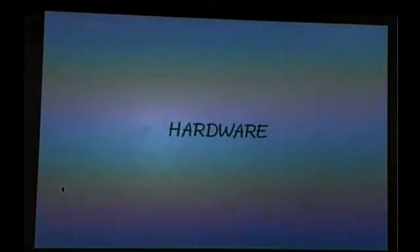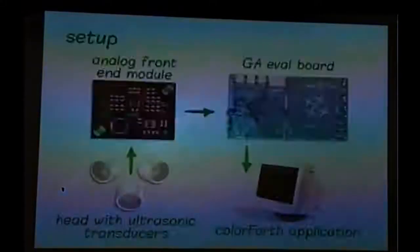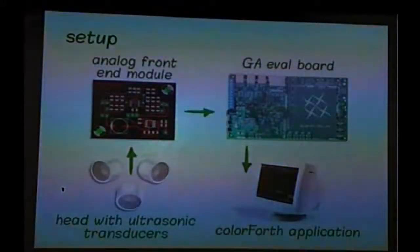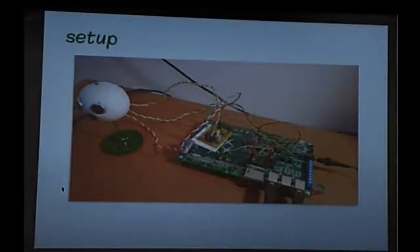There is a little hardware that I need, and this, as in all my projects, is minimal hardware. So in this case, the setup looks like this. I have hybrid ultrasonic transducers connected to an analog module. This is essentially signal amplifiers. And then this is connected to GreenArrays evaluation board. All processing takes place in those two chips. And then I have a ColorForth application in this notebook, and I use it to visualize the results. For people who don't see this table, it looks something like that. So this is the head. This is the analog module. That's a GreenArrays evaluation board.